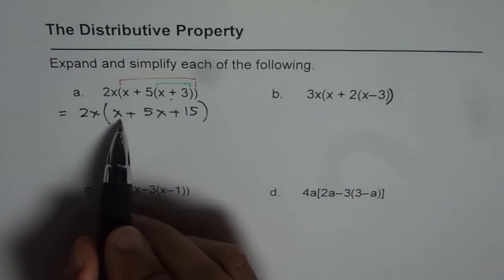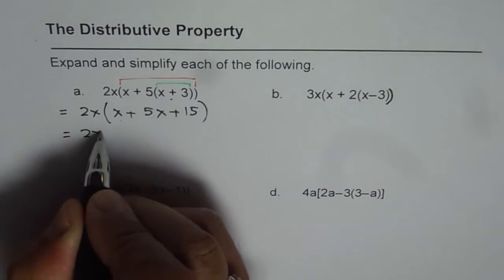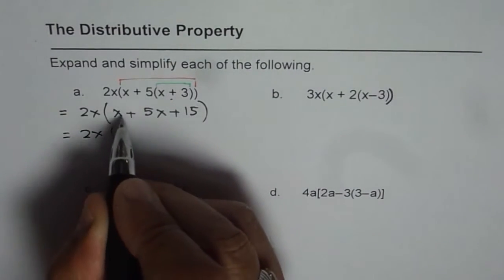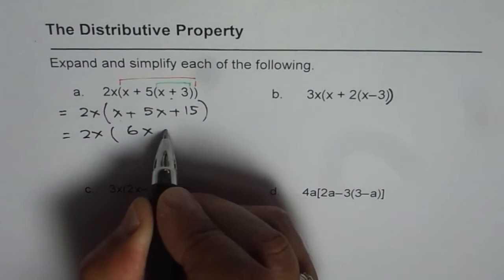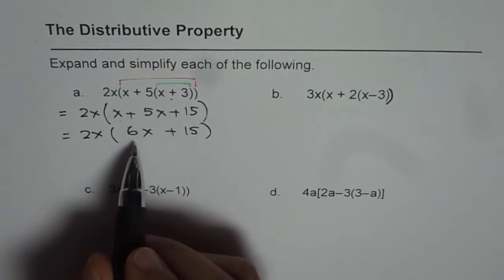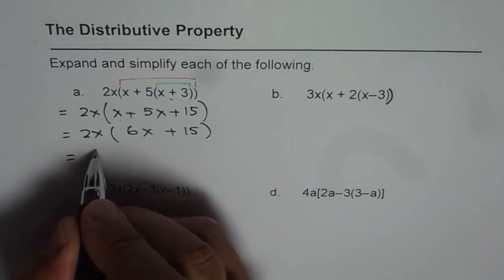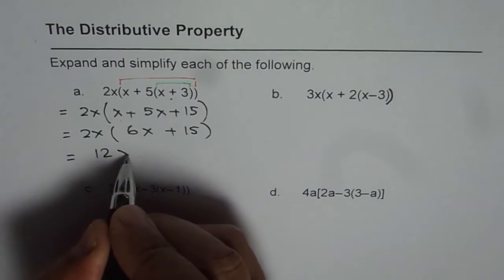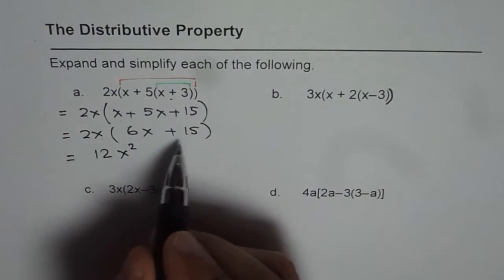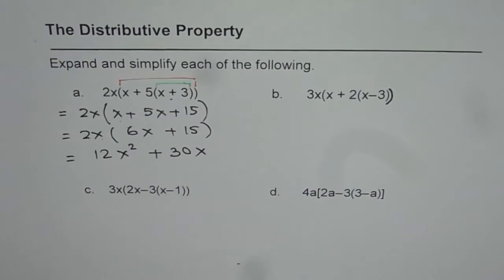Now we can combine the like terms. We have x and 5x, which is 6x. So we have 2x times (x plus 5) giving 6x plus 15. Now let's apply the distributive property once again: 2x times 6x is 12x squared, and 2x times 15 is 30x. That is how it should be solved.